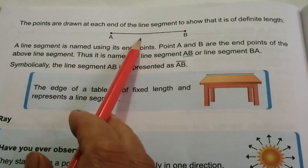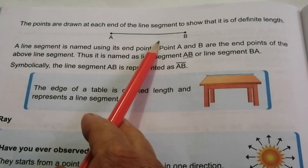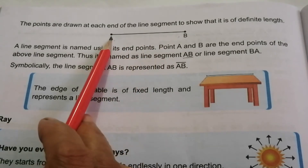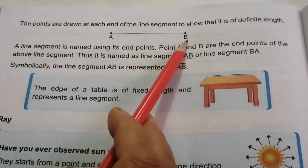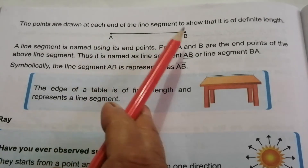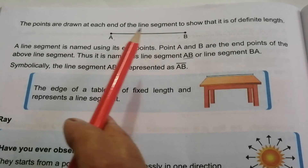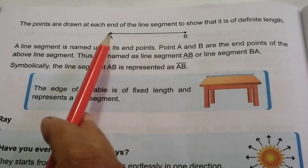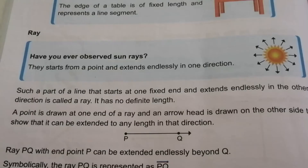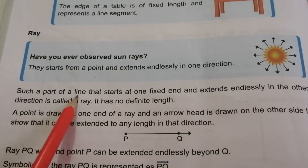The difference between a line segment and a line: a line segment has a fixed length, but a line has no fixed length. A line segment has no arrowheads at either end, but a line has arrowheads at both ends.